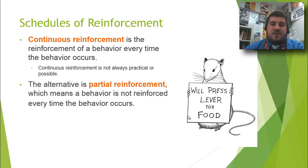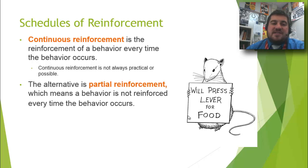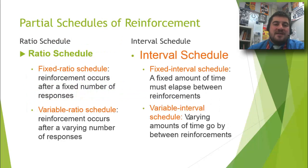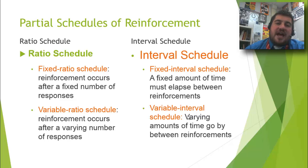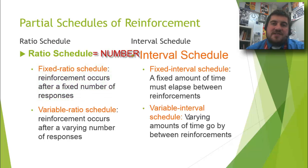Now, schedules of reinforcement — two types: continuous and partial. Continuous reinforcement reinforces a behavior every time it occurs; the rat hits the lever and gets food every single time. It's not always practical, so a lot of reinforcement is partial. There are four ways of dividing partial reinforcement using ratio and interval schedules, each of which can be fixed or variable. Fixed ratio is reinforcement after a fixed number of responses — every fifth time the rat hits the lever, it gets a pellet.